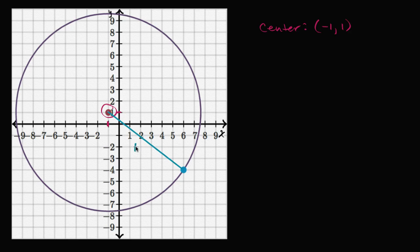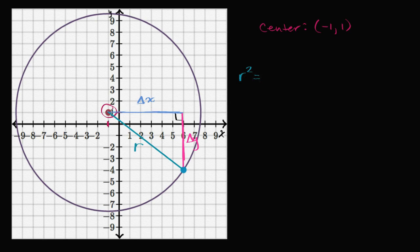So this is the radius. We could figure out a change in x as we go from the center to this point, and then we could say that this is our change in y. Our change in x squared plus our change in y squared is going to be our radius squared. That comes straight out of the Pythagorean theorem — this is a right triangle. So r² = Δx² + Δy².